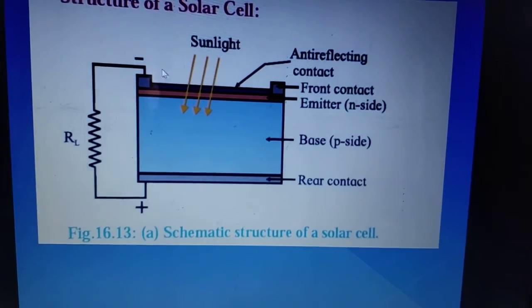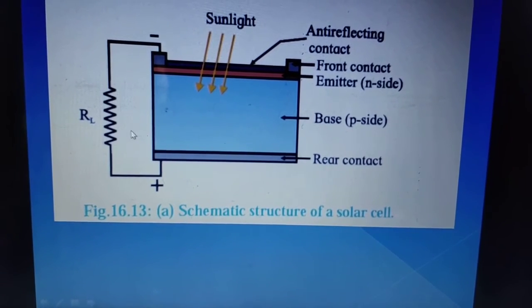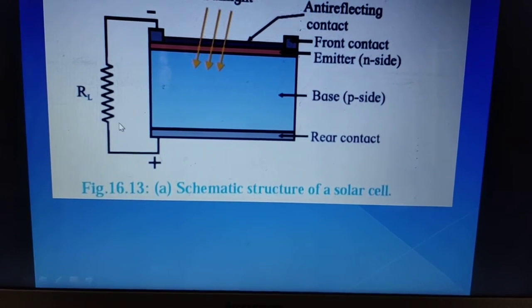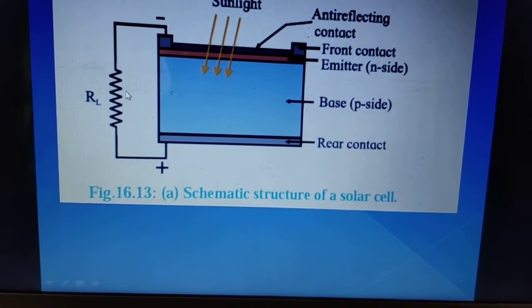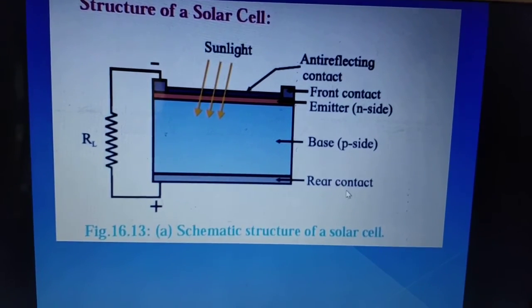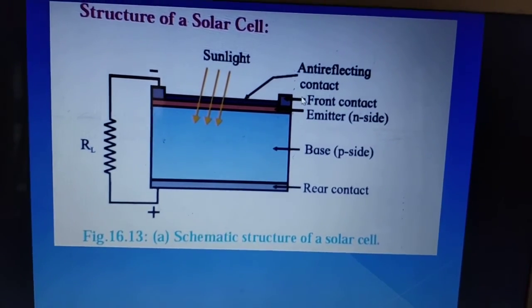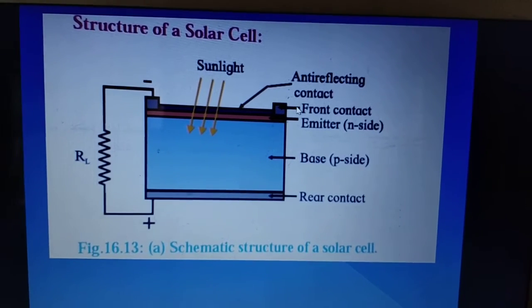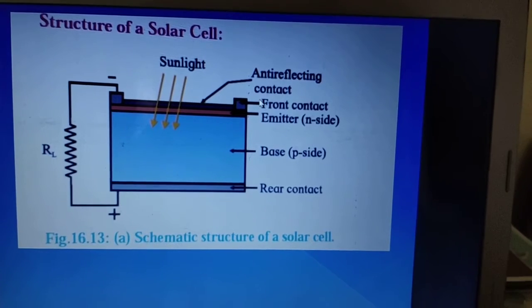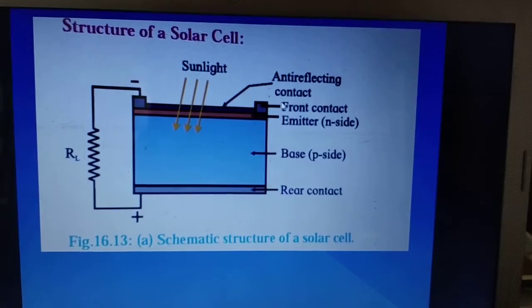You also see an external load resistance and this is the direction of the current. As the cursor is moving, this is the direction of the current through which the current will pass which is generated by the solar cell. This is the rear contact and this is the front contact. We see the solar cells installed in different panels on rooftops and they are arranged in an array. There is a specific arrangement of these solar cells.